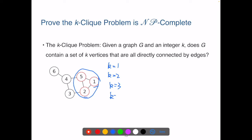connected. When k is 4, the answer is no. We cannot find any 4 vertices in this graph where all pairwise vertices are directly connected.